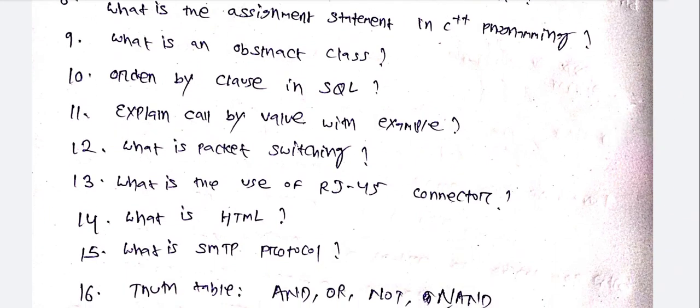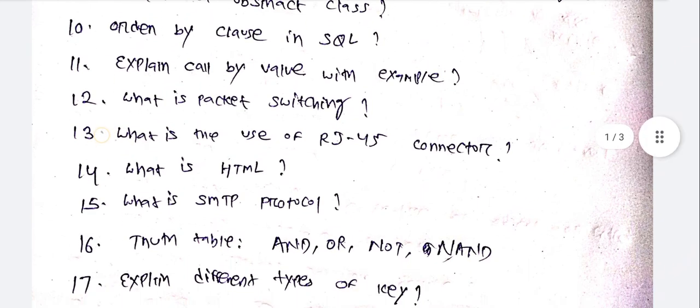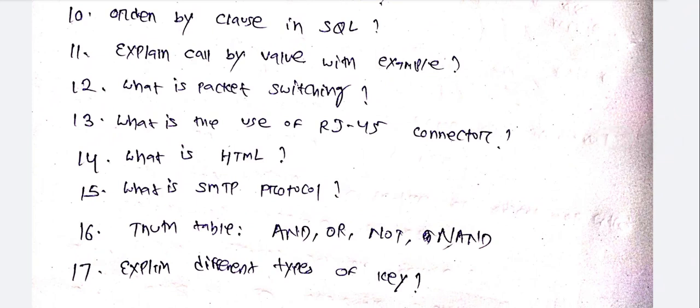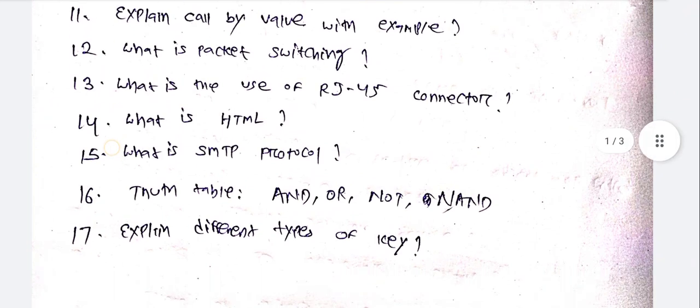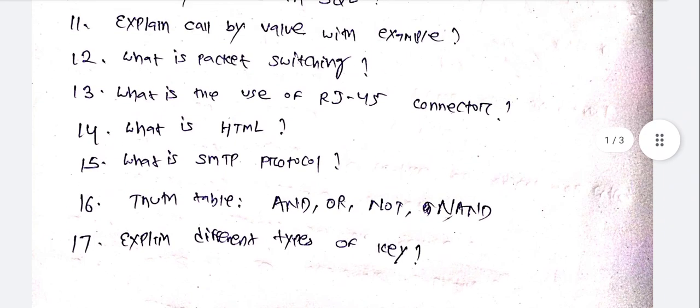What is an abstract class? Order by clause in SQL. Explain call by value with example. What is packet switching? What is the use of RJ45 connector? What is HTML? What is SMTP protocol? Truth table — AND, OR, NOT, NAND — you can see all the gates. Explain different types of keys.